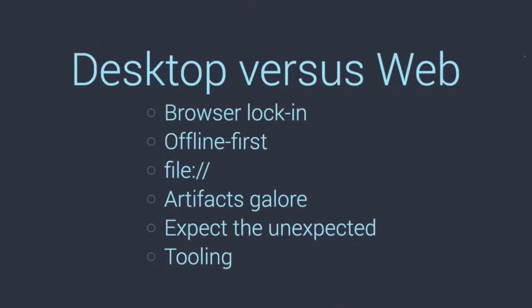What's it like to build a desktop app versus a web app? First of all, there's browser lock-in — which is a guilty pleasure. You know every single one of your users is using Chromium, and you know which version. So you can use ES6, experimental features, or whatever you want. You forget about cross-browser compatibility and IE. You could even use the power of Node combined with browser lock-in to do things that would be impossible on the web.